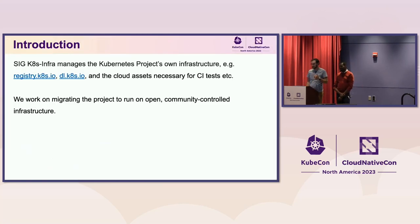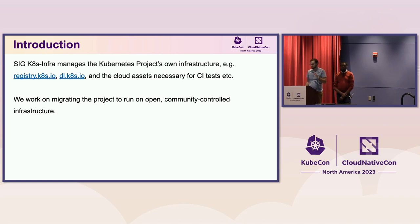So what is SIG K8s Infra? SIG K8s Infra manages the Kubernetes project's own infrastructure — the cloud-native infrastructure we need to run Kubernetes the project. That includes things like registry.k8s.io, where you're fetching container images, or dl.k8s.io, where you might be fetching a kubectl binary, and all the cloud assets and CI resources, in conjunction with other SIGs like release and SIG testing.